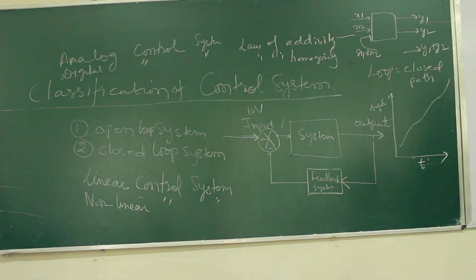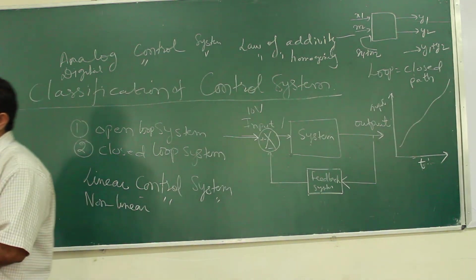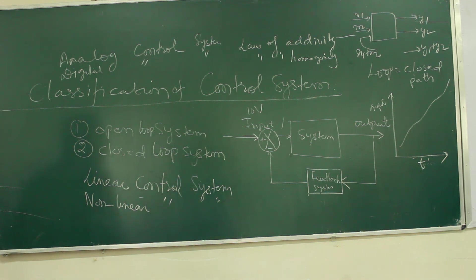So control system means giving input, getting desired output. After this, the next concepts come: some terms related to the control system. So today, I am stopping here. Tomorrow, we will discuss some important terms related to the control system.